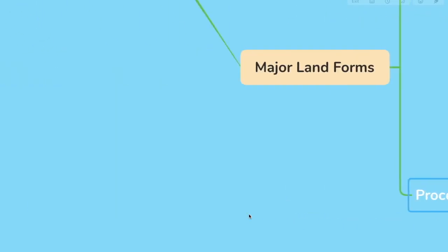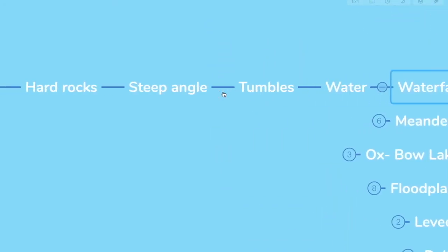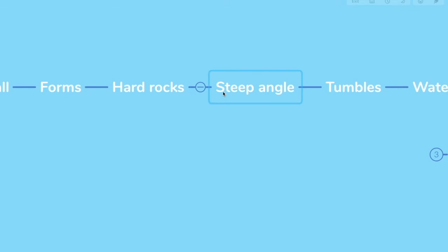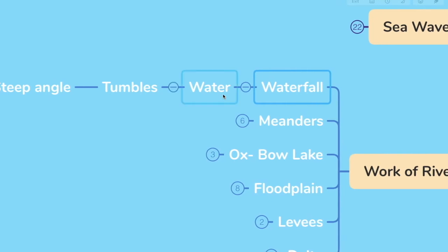Now the process of erosion and deposition create different landforms. Let's move forward. Let's look at work of river. First, we have waterfall. When the river tumbles at a steep angle over hard rocks or down a steep valley side, it forms a waterfall. And I'm sure you have seen waterfall a number of times in your life.